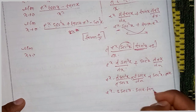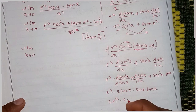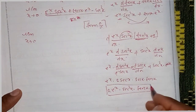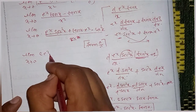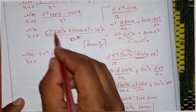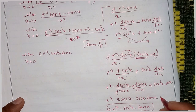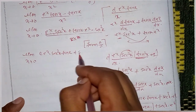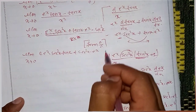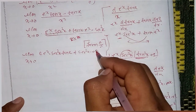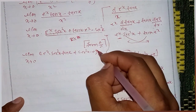The result is: e^x into 2 sec x into sec x derivative — which is sec x into tan x. So we get e^x into 2 sec square x into tan x. Our derivative came to: e^x into sec square x plus tan x into e^x. So that is: plus sec square x into e^x, plus 2 e^x into sec square x into tan x.